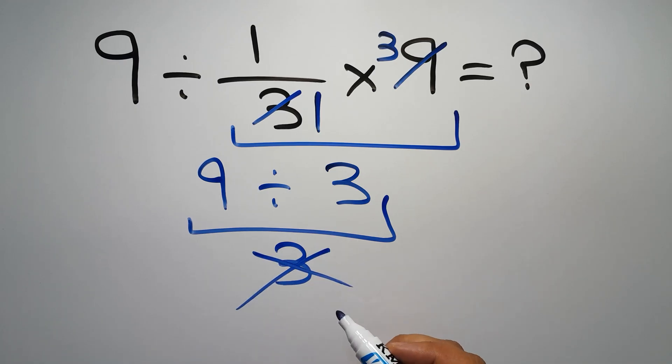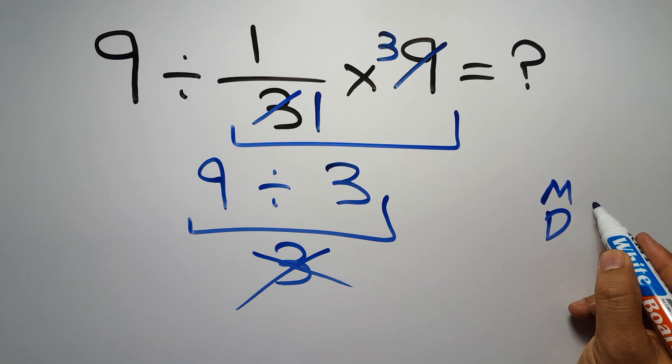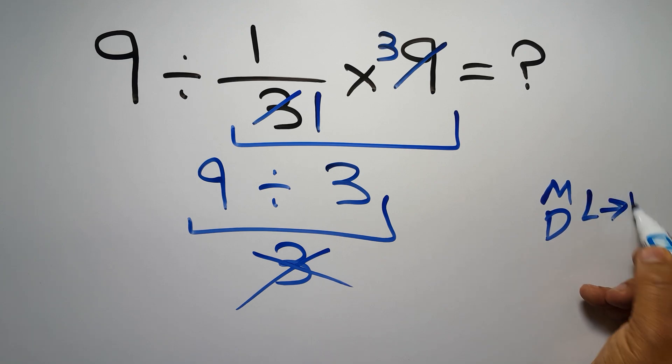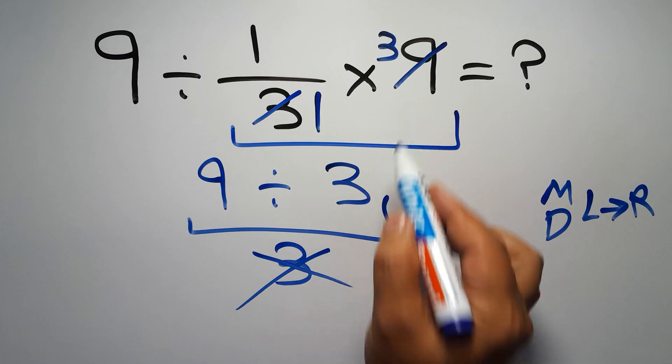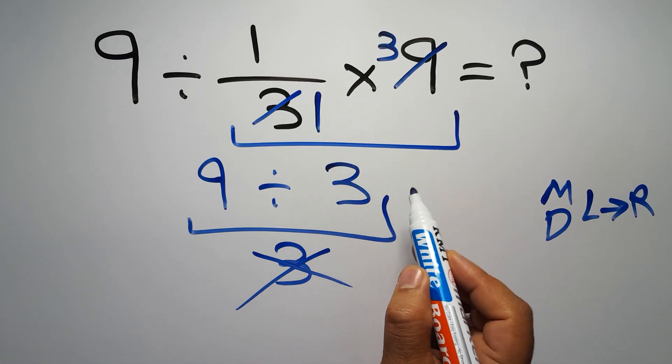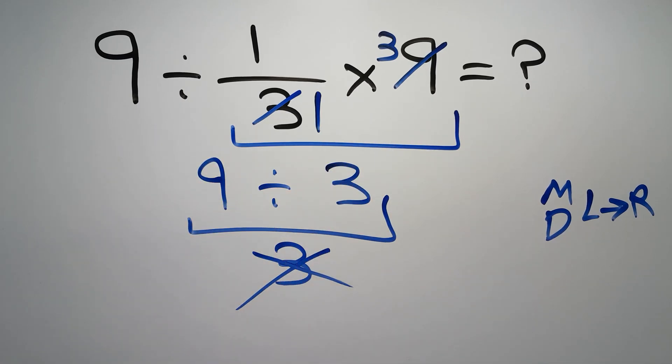Because according to the rule of operations, multiplication and division have equal priority, and we have to work from left to right. So here first we have to do this division, then this multiplication. If we do this multiplication before this division, it is wrong.